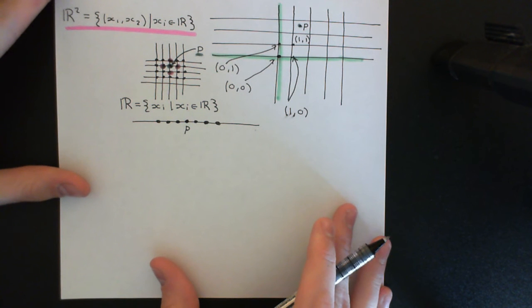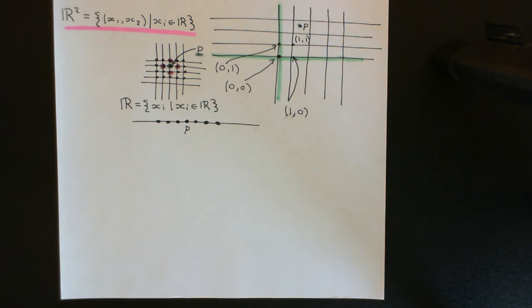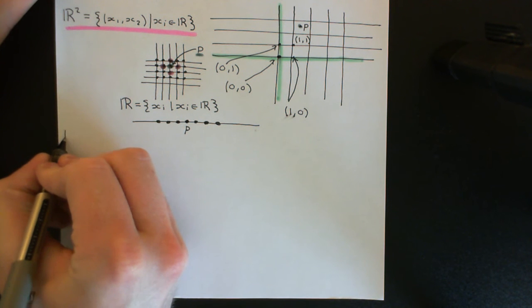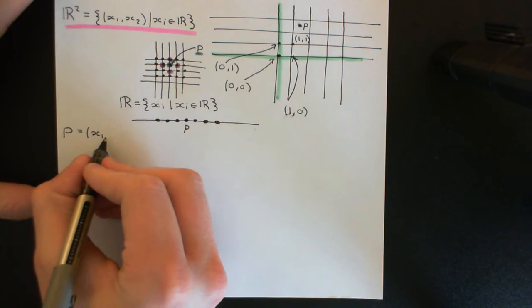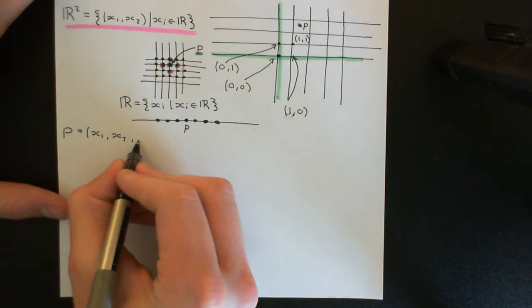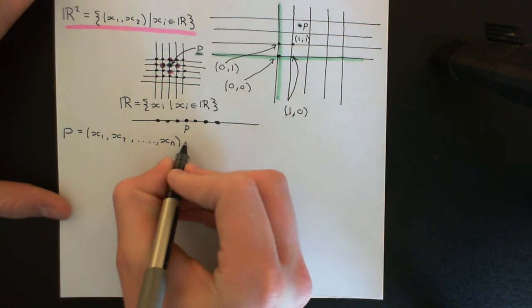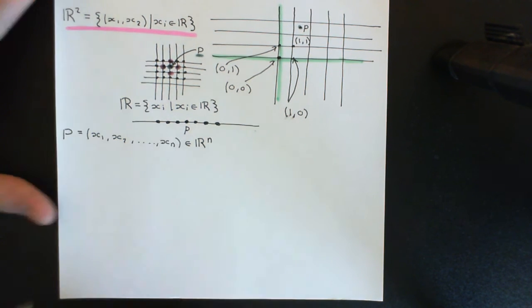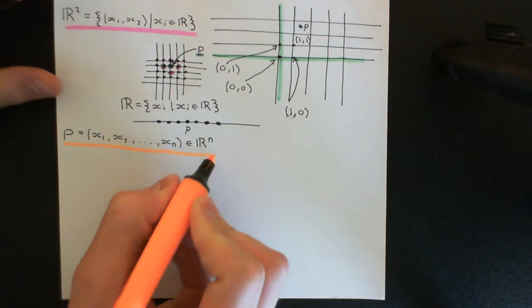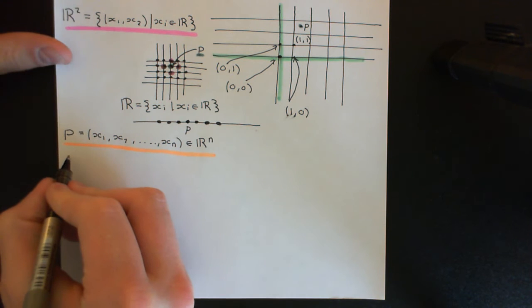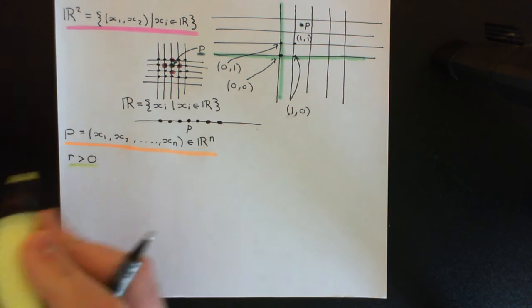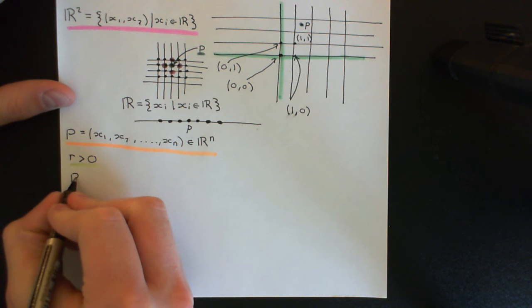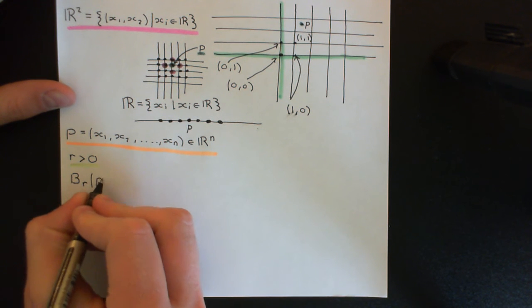The first thing that we need to define is what is meant by a ball around an element of Rn of radius R. We're going to take some element of Rn, which I will denote by P here. We're back up to the abstract Rn, the general Rn, rather than R2 that we were working with before. An element from the general Rn is just an n-tuple of real numbers. We're going to also need a radius R, which is just going to be some real number greater than zero.